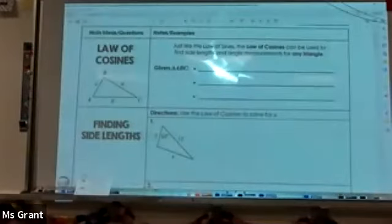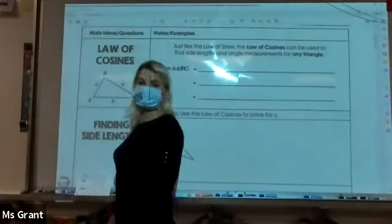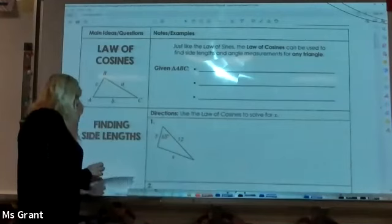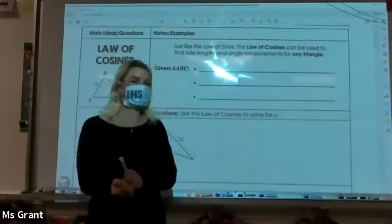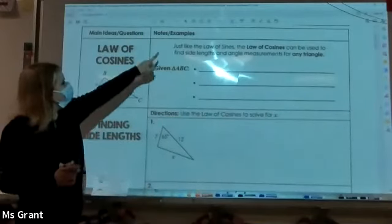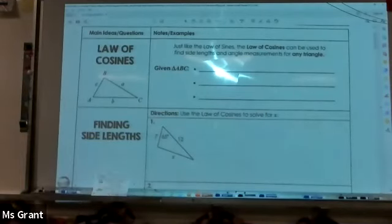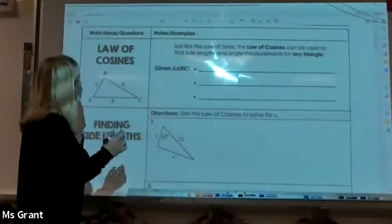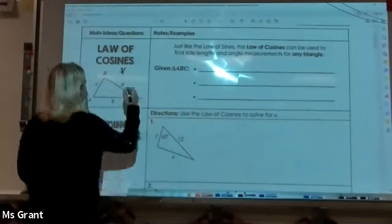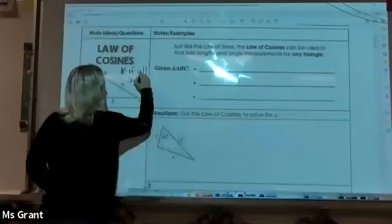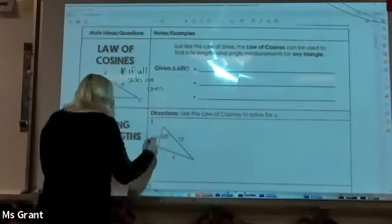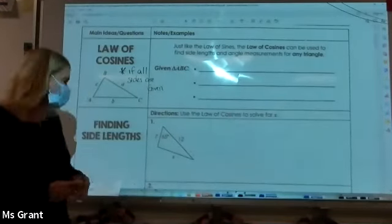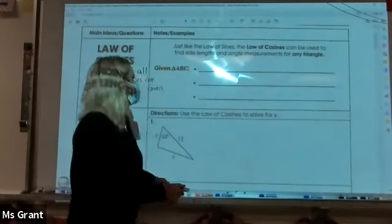All right, our lesson today is the law of cosines. When we do trig, cosine means adjacent over hypotenuse, but today it's a little bit different. Just like the law of sines, the law of cosines can be used to find side lengths and angle measurements for any triangle. I would use the law of cosines...